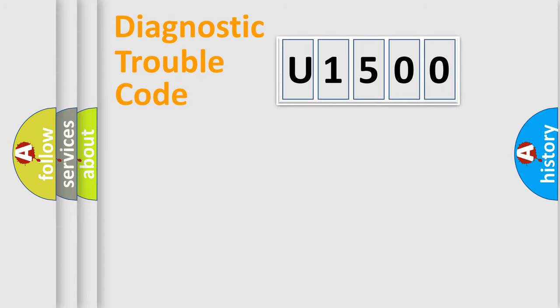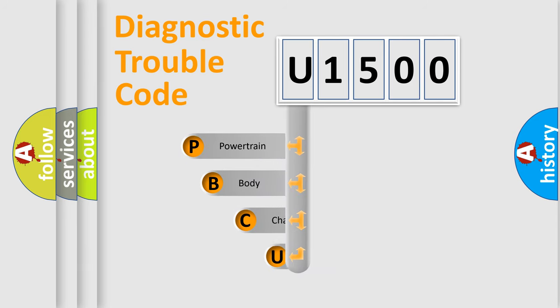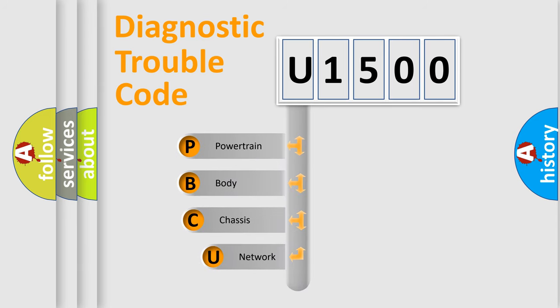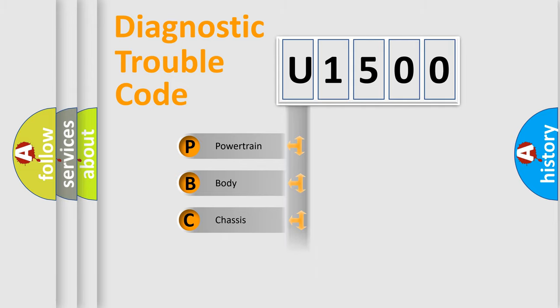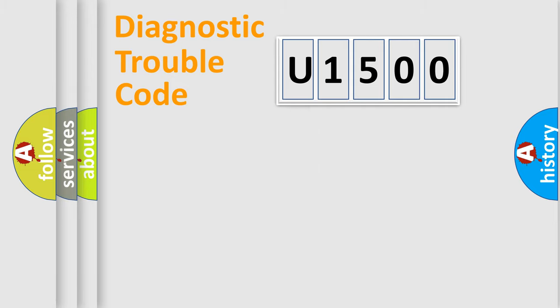Let's do this. First, let's look at the history of diagnostic fault code composition according to the OBD2 protocol, which is unified for all automakers since 2000. We divide the electric system of the automobile into four basic units: Powertrain, Body, Chassis, and Network.